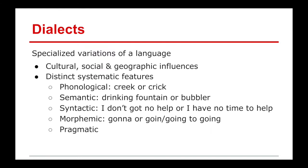In terms of dialect, there are specific differences — different cultural, social, and geographic influences that impact language use. There are different systematic features: phonological, like whether a path of water is called a 'creek' or 'crick'; semantic, like 'drinking fountain,' 'water fountain,' or 'bubbler'; syntactic, like 'I don't have help' versus 'I can't get no help'; and morphological changes, like 'going to' versus 'gonna.' These are different specialized variations of a language used in different parts of the world.